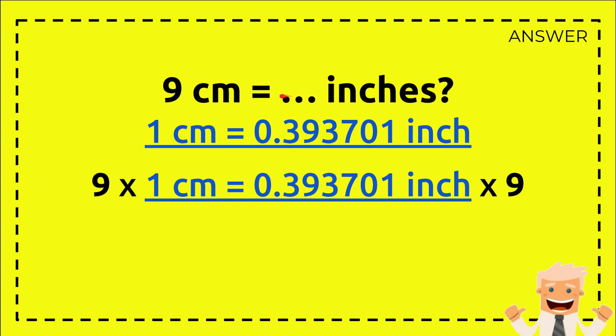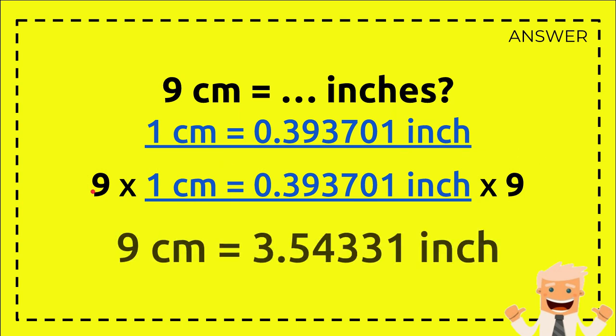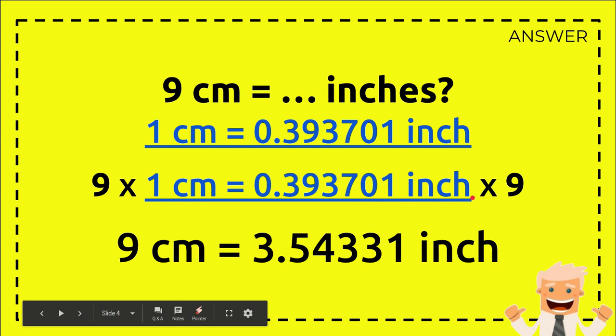We have this equation, so we need to put 9 here: 9 times 1 and 9 times this number. 9 times 1 centimeter equals 9 centimeters, and then 9 times this number equals 3.54331 inches.